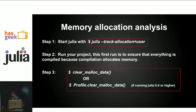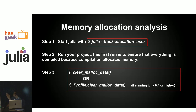There may also be situations where you want to check the memory allocation of your program. Julia gives you great support for this. You start Julia in the memory location mode — here is how you do it. The next step is that you should run your program twice, not just once — you should run your test scripts twice.